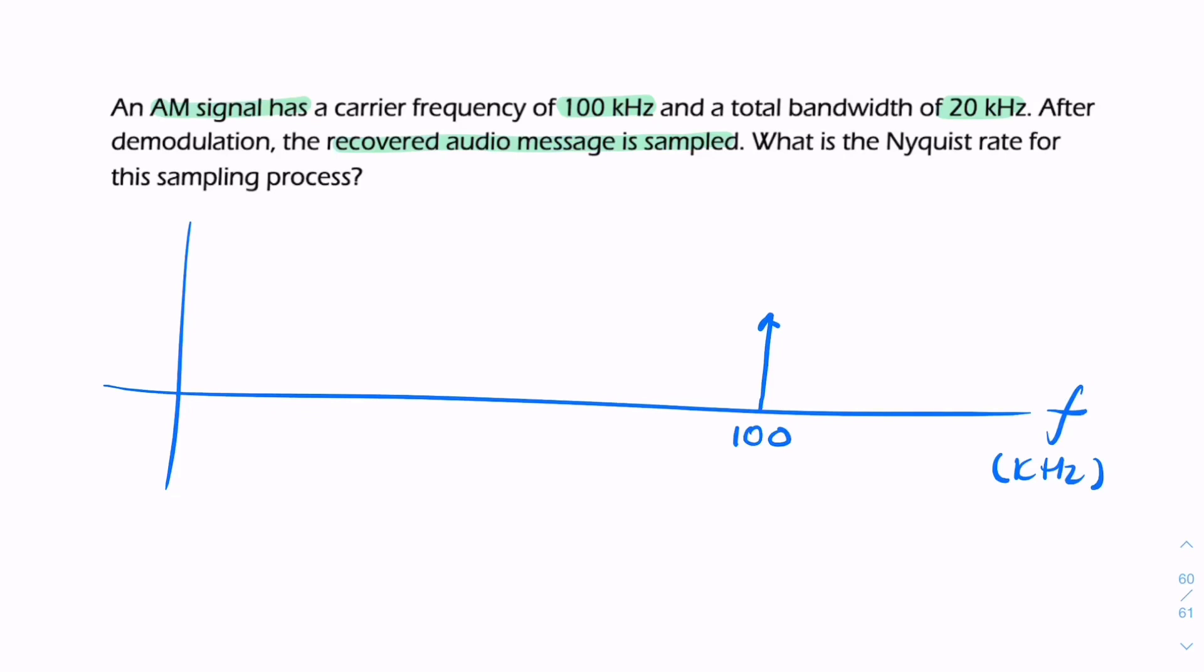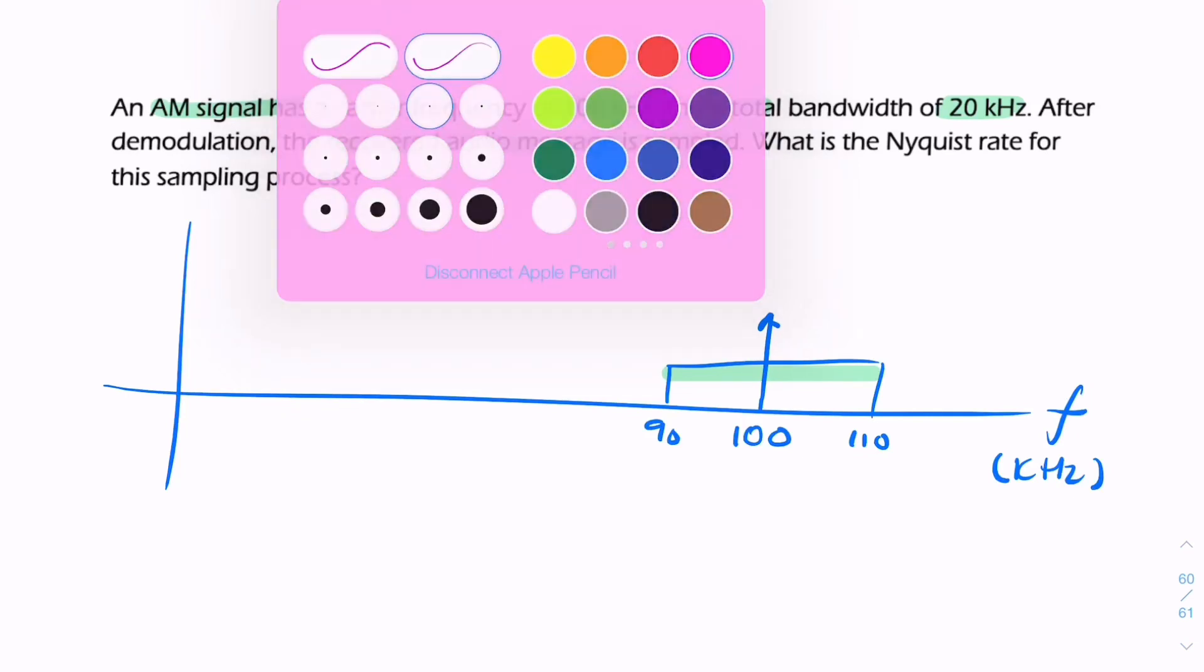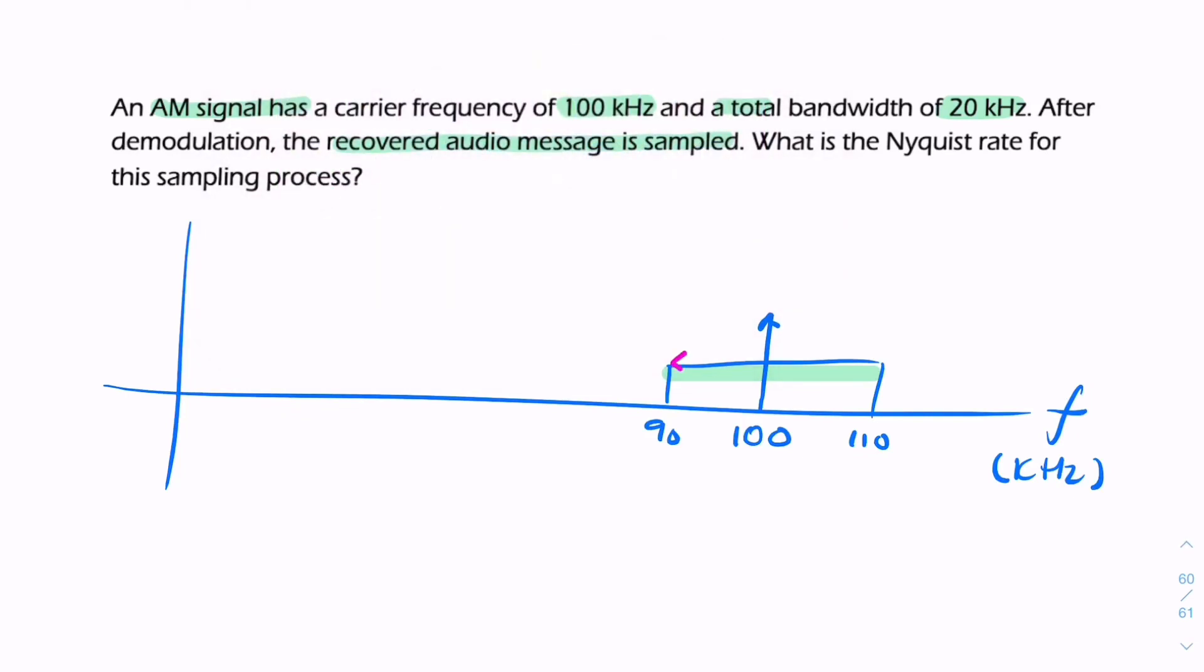We have a total bandwidth of 20 kHz, and that means both sidebands. So we have 10 kHz in either sideband, making the total bandwidth 20 kHz.